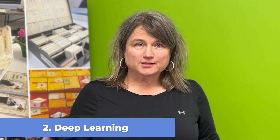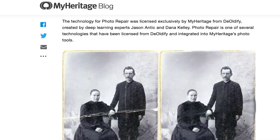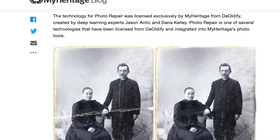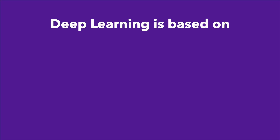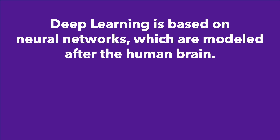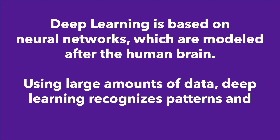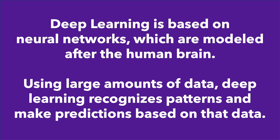One type of artificial intelligence is called deep learning. MyHeritage uses deep learning for its photo repair services. Deep learning is based on neural networks, which are modeled after the human brain. It uses large amounts of data, recognizes patterns, and makes predictions based on that data. The more a program works with the data, the more it learns, creating more patterns — so photo repair is just going to get better and better.